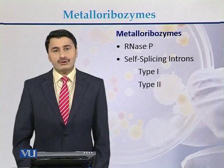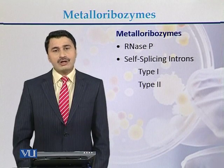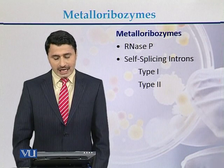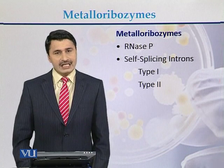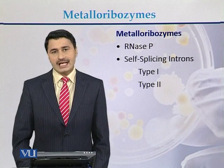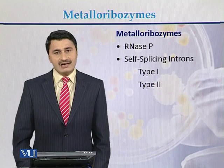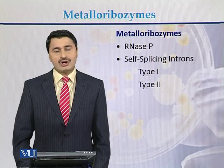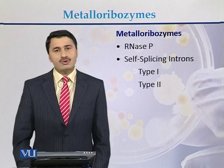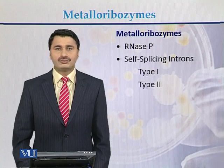To conclude, metalloribozymes are of two types: RNase P and self-splicing introns. The self-splicing introns are again of two types — they belong to group 1 and group 2.